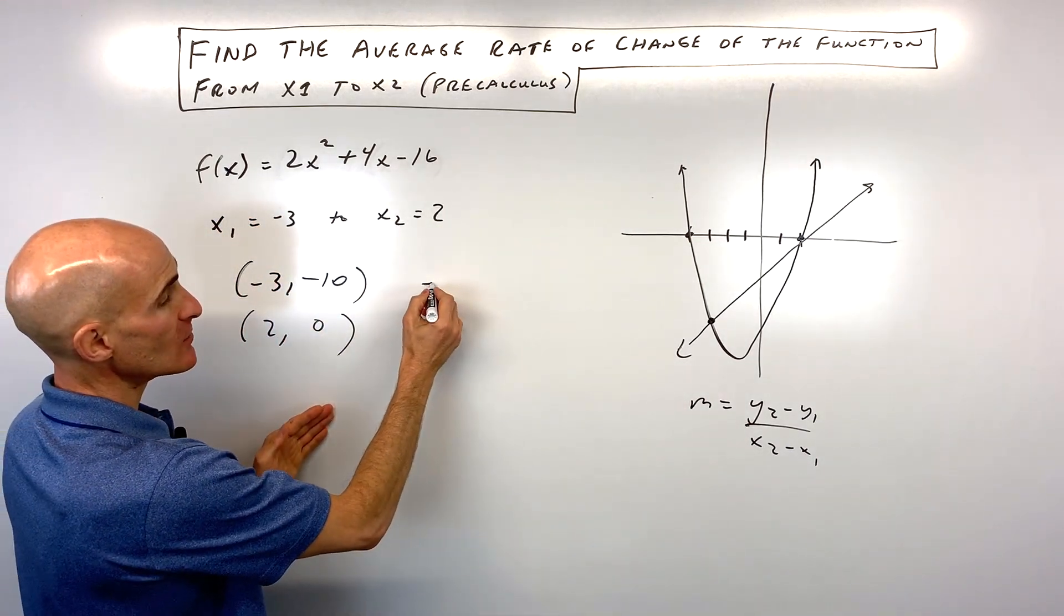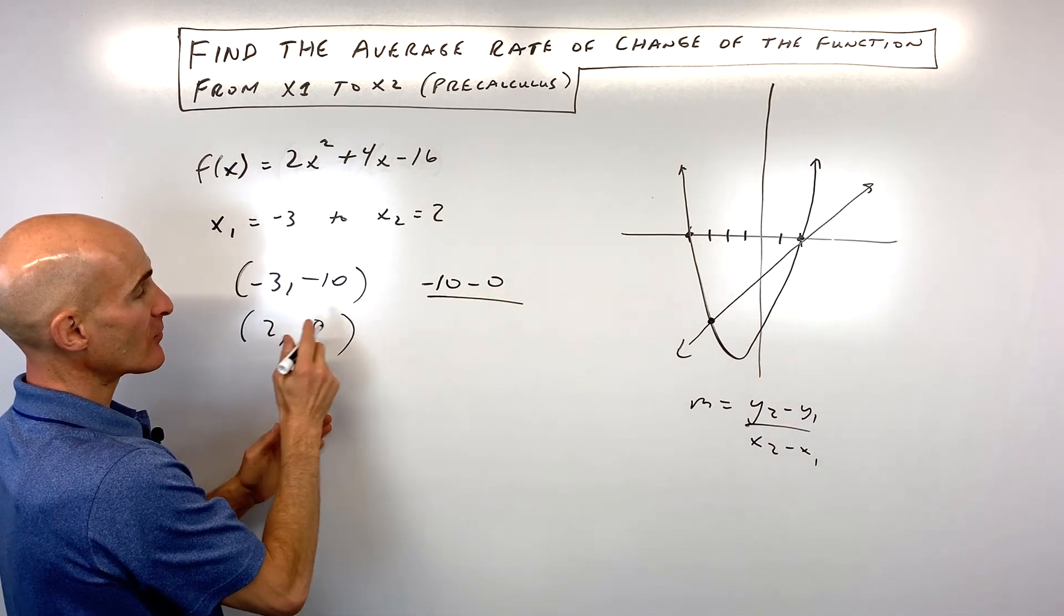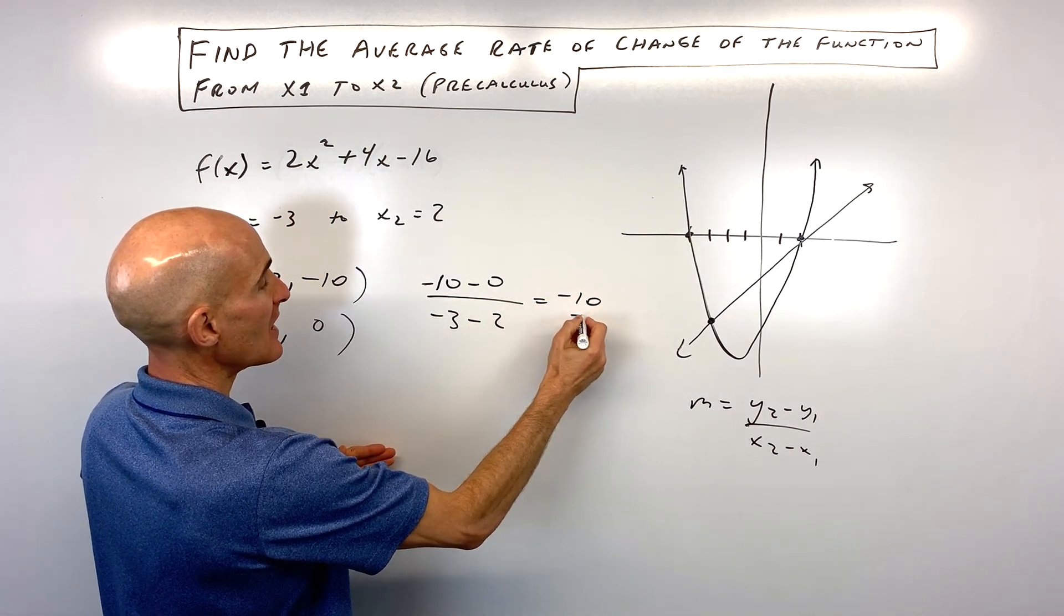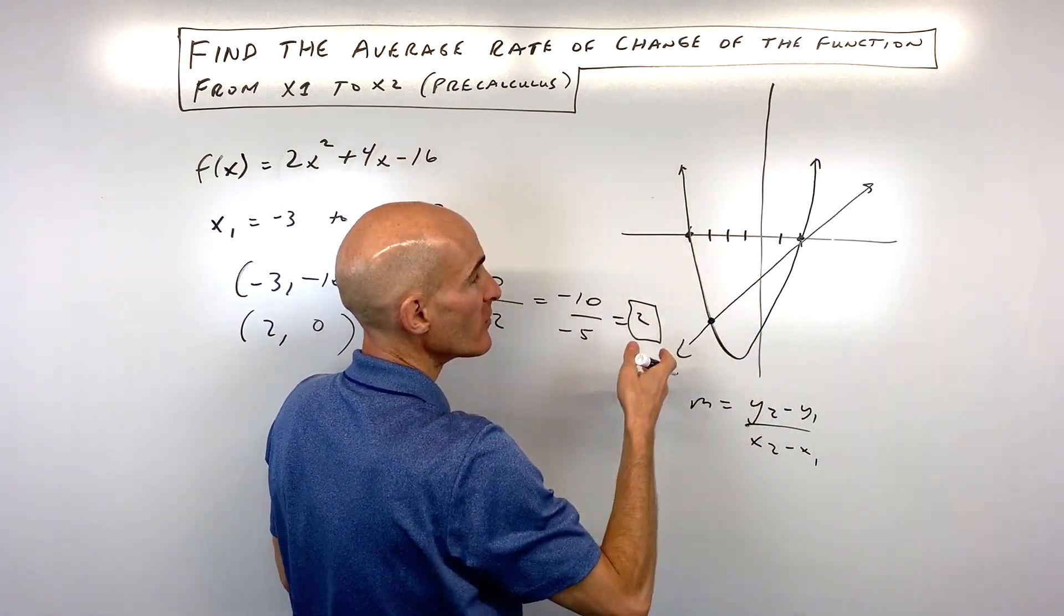Let's go ahead and put them into our slope formula. This is going to be -10 minus 0—I'm just subtracting the y values—divided by -3 minus 2, which equals -10 over -5, which equals 2. And that's the slope of this line, that's the average rate of change.